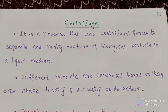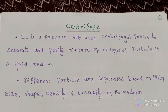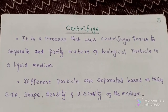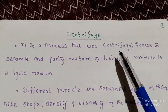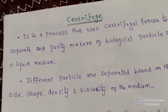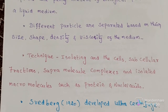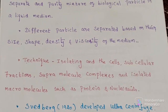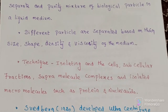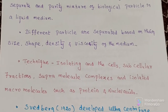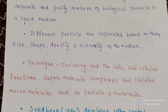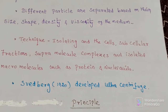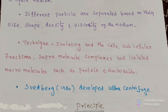It is a simple device or machine used to separate different types of particles based on size, shape, density, and viscosity of the medium. The most important force used here is centrifugal force. It is a key technique for isolating and analysing cells, subcellular fractions, supramolecular complexes, and isolated macromolecules such as proteins and nucleic acids. The first analytical ultracentrifuge was developed by Svedberg in the era of 1920.